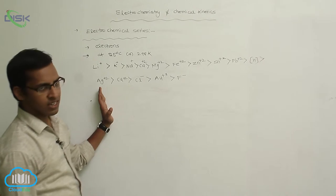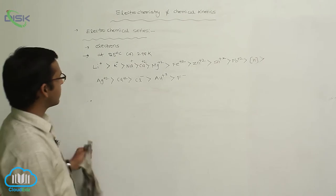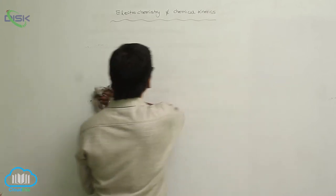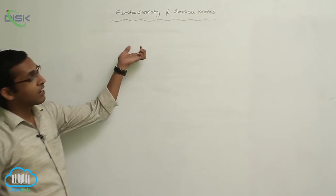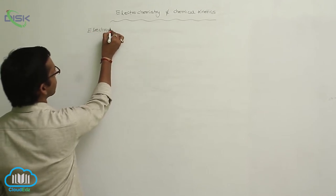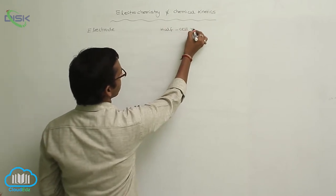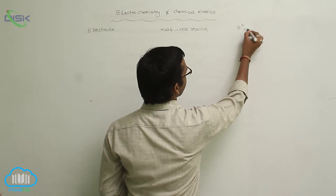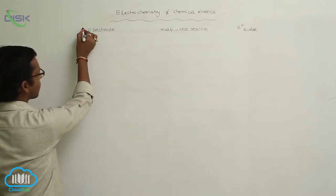These are the electrochemical series — specifically for reduction potential values. By considering various electrodes, we have a table with columns for electrode, half-cell reaction, and the E° (standard) value for each electrode.